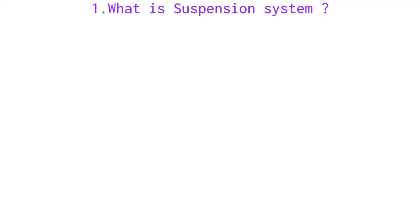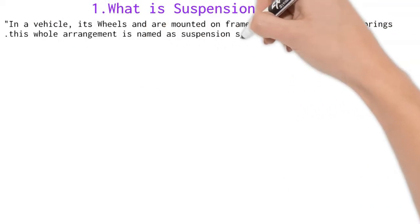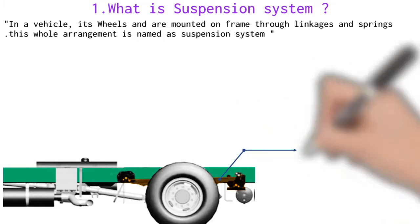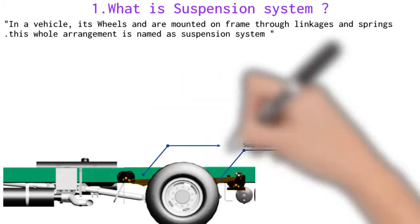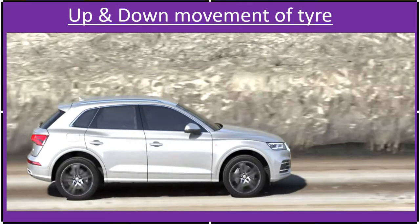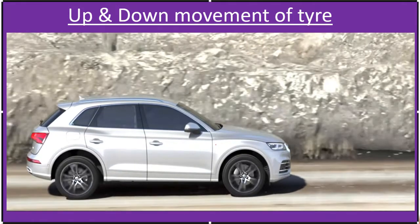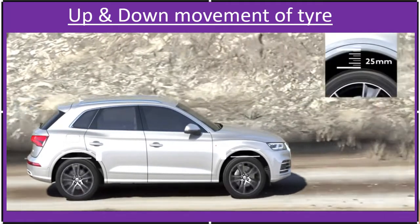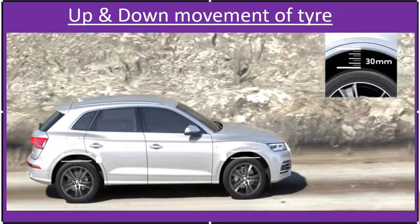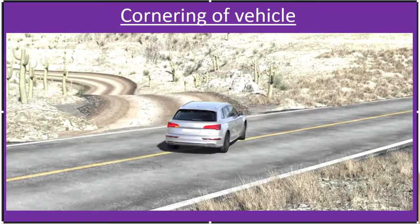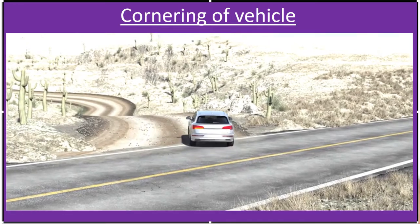Suspension system. In a vehicle, its wheels are mounted on the frame through linkages and springs. This whole arrangement is named as the suspension system. The suspension system allows the vehicle to bounce up and down on rough roads whereas the rest of the vehicle remains fairly steady. It also allows cornering with minimum roll, minimizing the tendency to lose traction between the tires and the road surface.